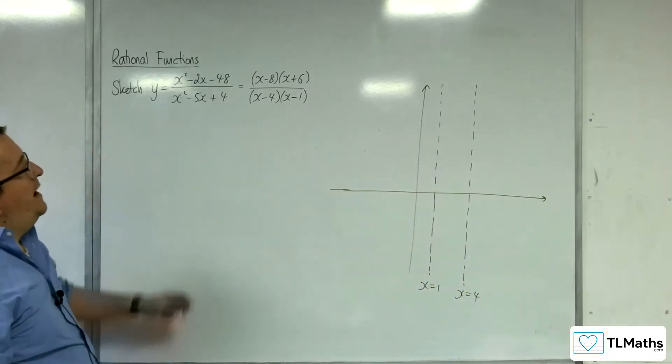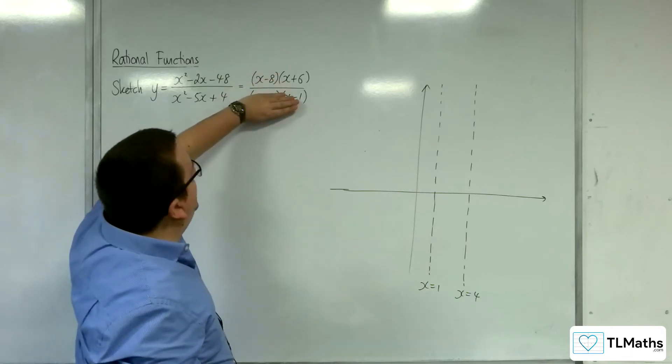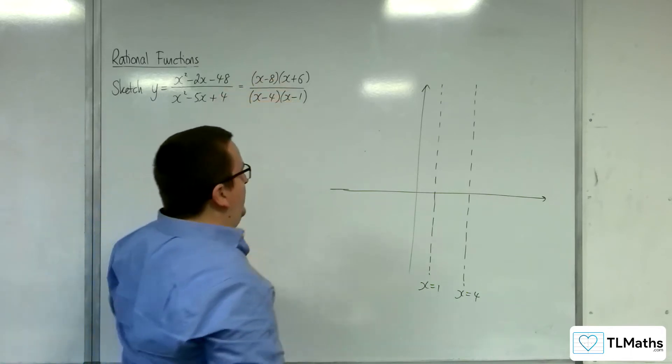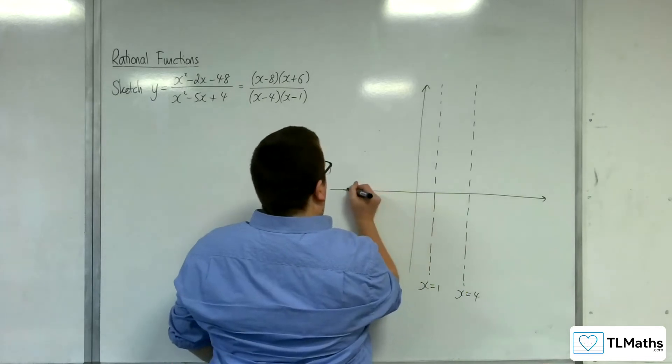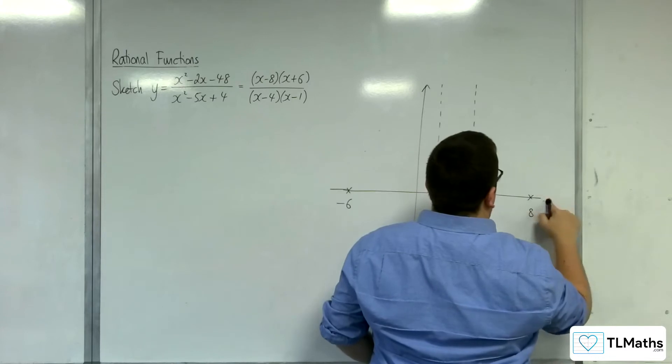And now where is it crossing the x-axis? That's when the numerator is 0, so at minus 6 and 8. So minus 6 somewhere over here, and 8, let's say somewhere over there.